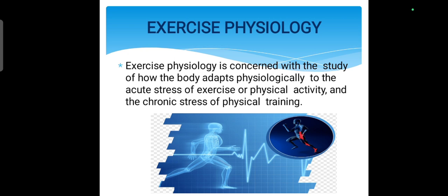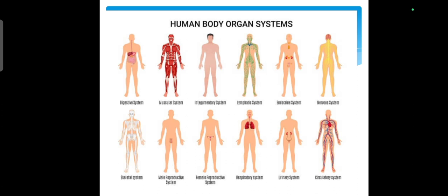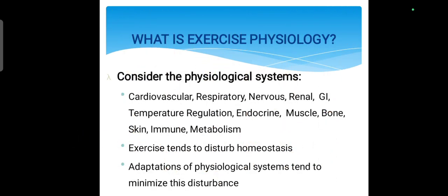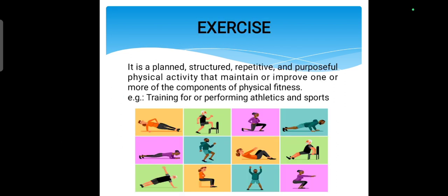We have different human body systems: digestive system, cardiovascular system, integumentary system, reproductive system, skeletal system, respiratory system, and urinary system. Whenever you are doing exercise, your physiology changes across all these body systems. It is very important to know how your body maintains homeostasis during exercise, what changes come from the cardiovascular system, and what changes come from the muscular system.